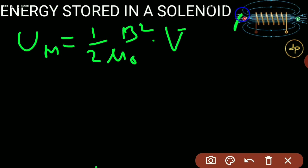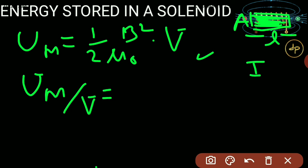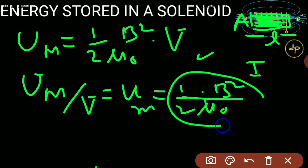The volume here is the cross-sectional area times the length of the solenoid — the space inside it in which the magnetic flux is established when current I flows. The magnetic potential energy per unit volume is called magnetic energy density, represented by small u, and equals u = B²/(2μ₀). This is the expression for magnetic potential energy density.